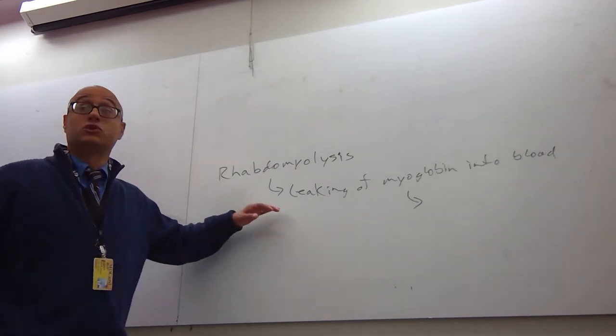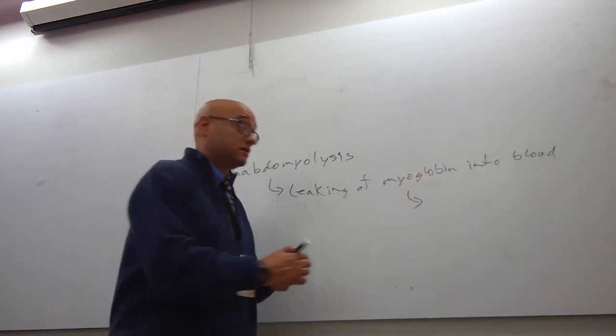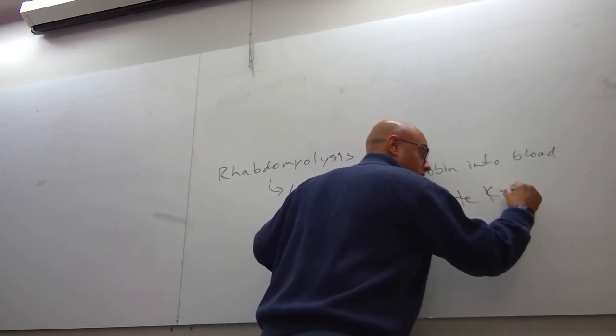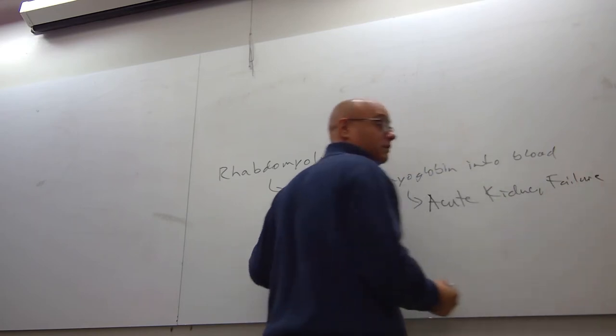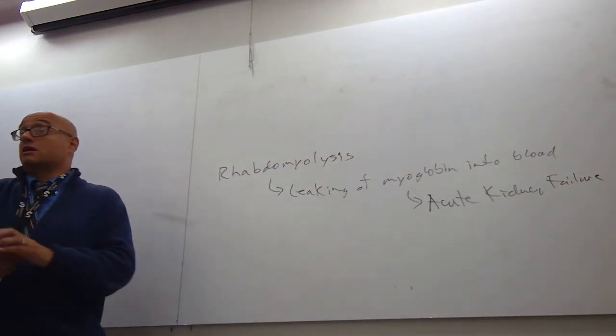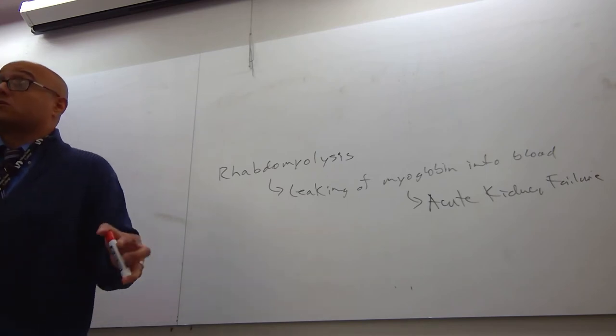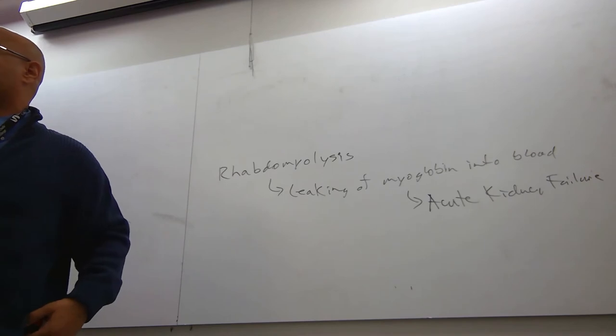Because if you destroy enough of these muscle cells and that myoglobin goes out, this can lead to acute kidney failure. I'm only just one step away from showing you guys some of the clinical pathological aspects of what goes wrong when muscle goes bad.